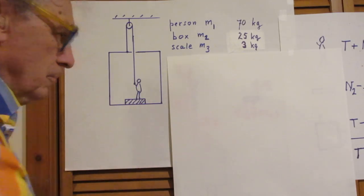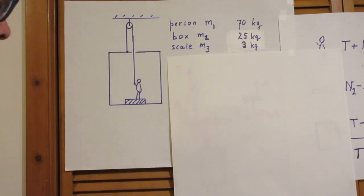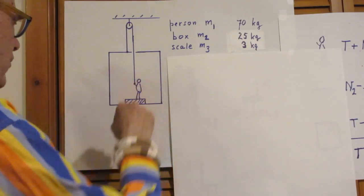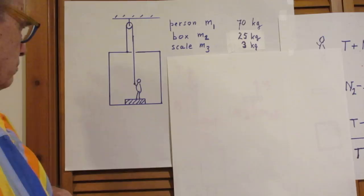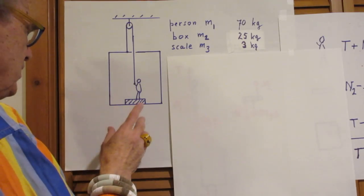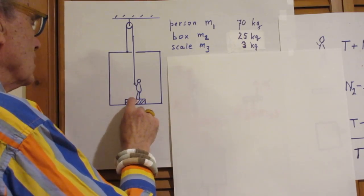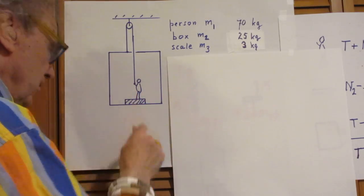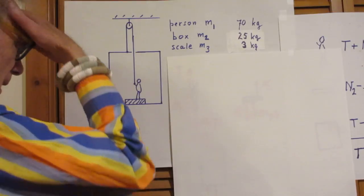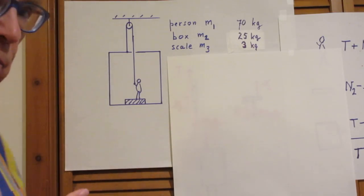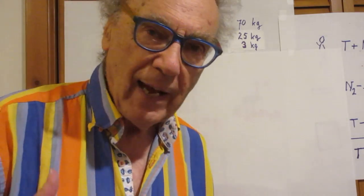The person, a strong woman, pulls on this rope in such a way that the whole system is static. Nothing is moving. And the question now is, what will the scale read? If she were to look down on the scale, what would the scale read? And we agreed that the scale indicates kilograms.